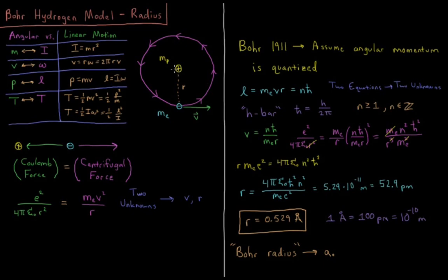To start off we have a proton which is fixed at our origin and we have an electron some distance r, the radius away from that, and is traveling with some velocity vector v.